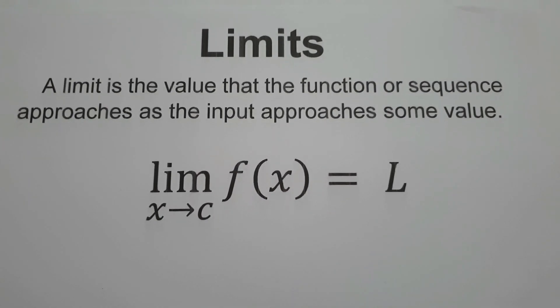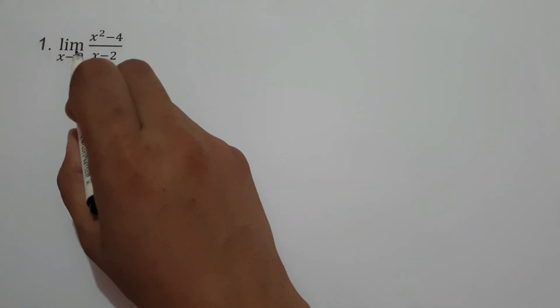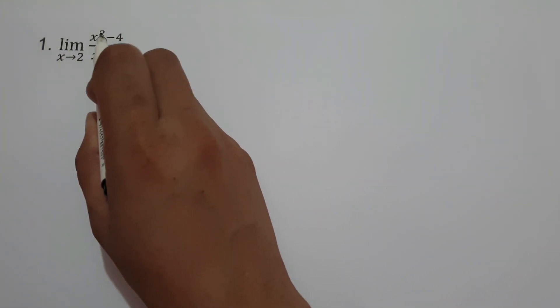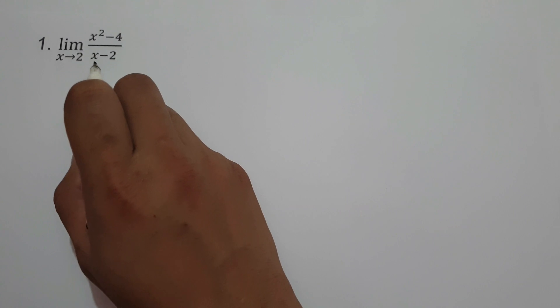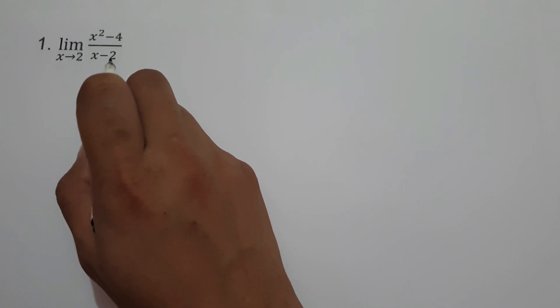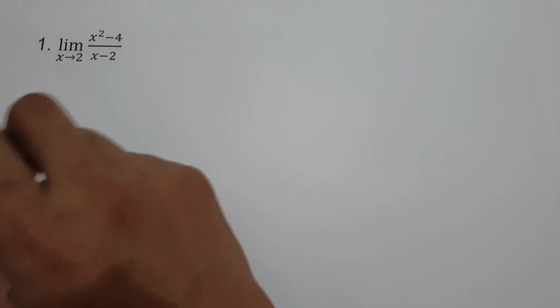Let's have an example. On the first example, we have the limit of x squared minus 4 all over x minus 2 as x approaches 2. So if we substitute the value of x, what would be the value of the given limit?